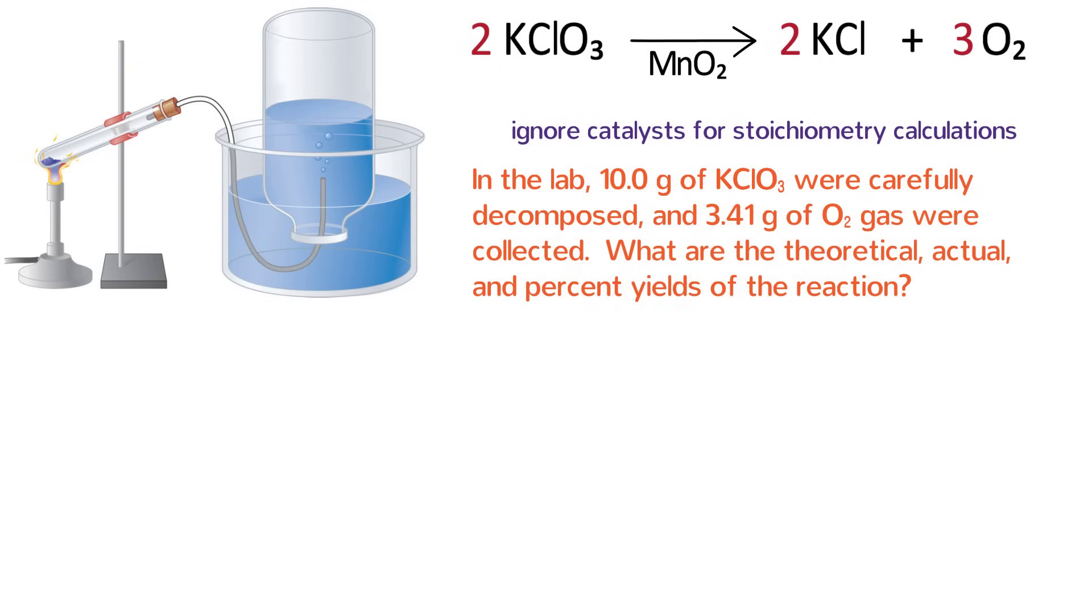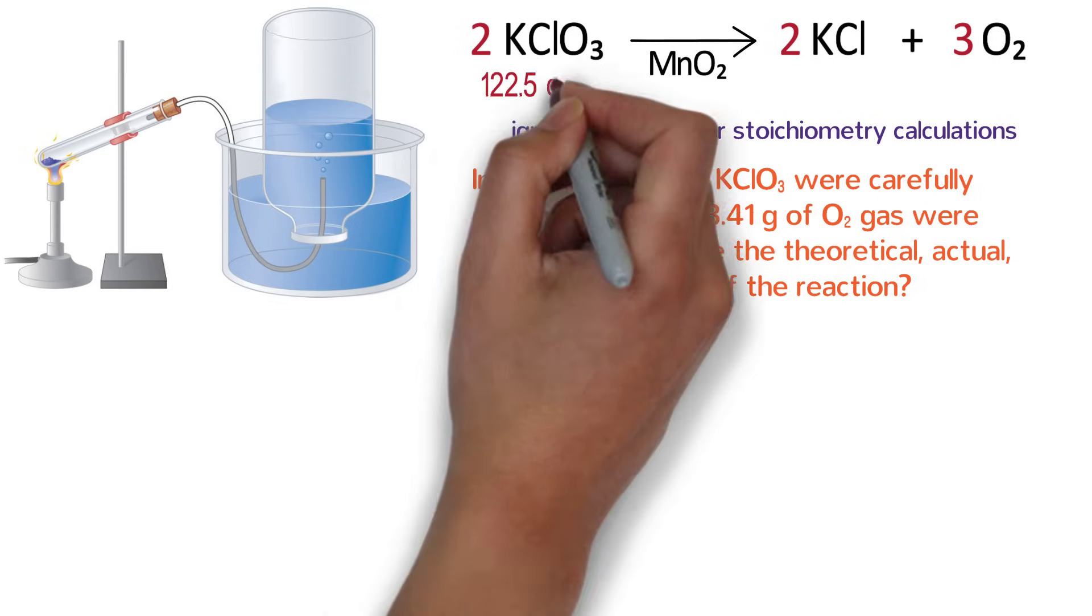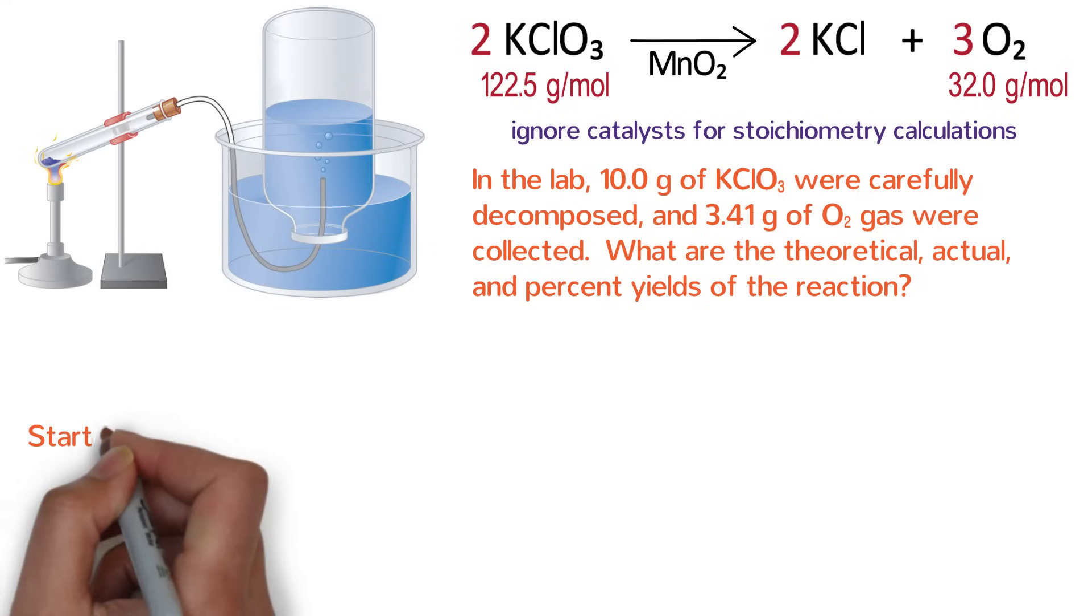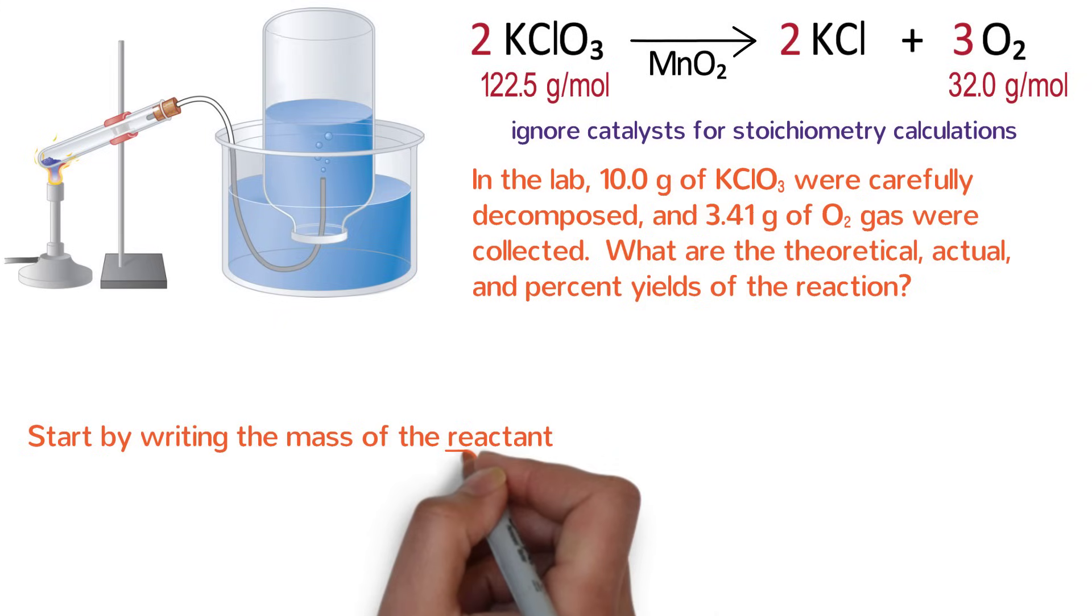The theoretical yield is the amount of product that should be made from the amount of reactant you are starting with. So this is a grams-to-grams stoichiometry problem going from the reactant to the product. We are going to need the molar masses of the chemicals, which we can solve by adding up the molar masses of the elements each one is made of. Potassium chlorate has a molar mass of 122.5 grams per mole. There are two products, which one should we solve for? Because the question tells us the amount of O2 collected, we should solve for O2, not KCl. The molar mass of O2 is 32 grams per mole.